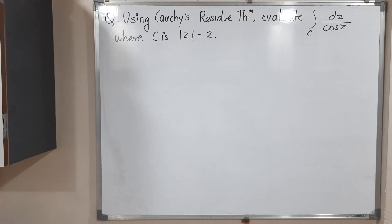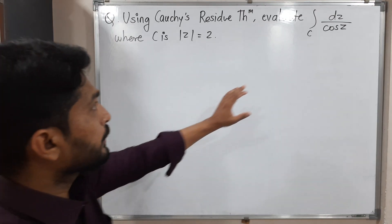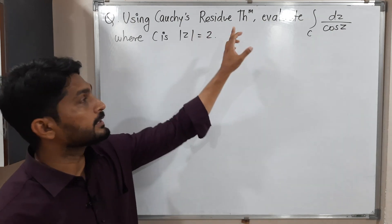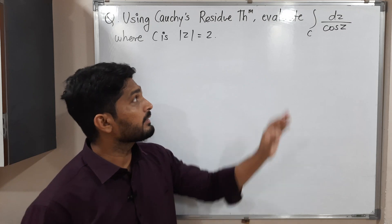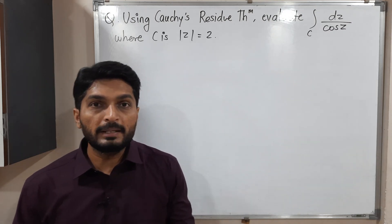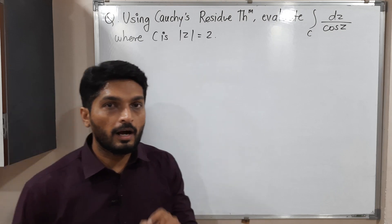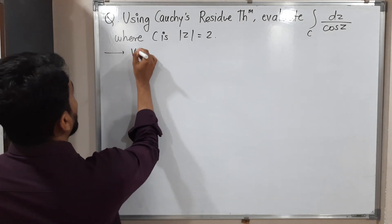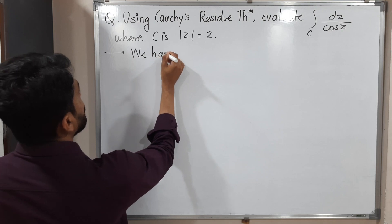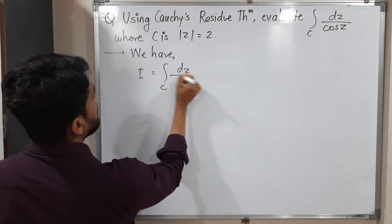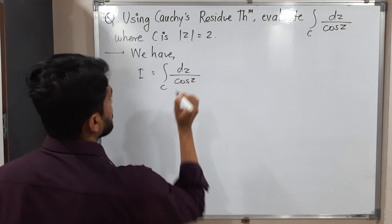Hi everyone. In this video we are going to discuss this example. We have to calculate the value of this integration with the help of Cauchy's residue theorem. The given integral is I, which is the integration over C of dz upon cos z.